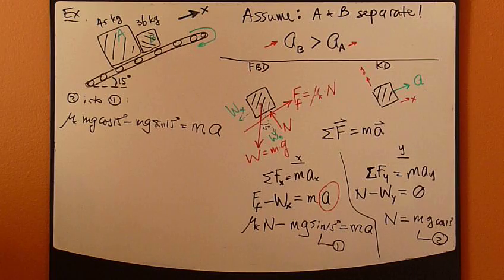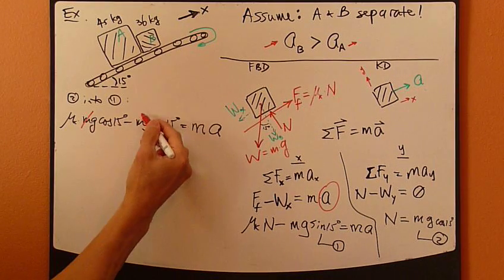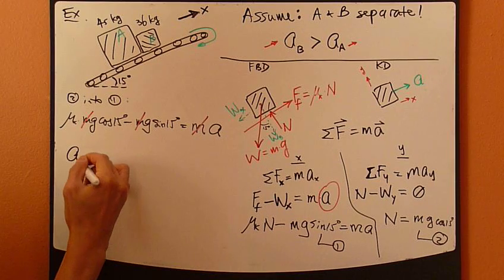Now look at this right here. We can simplify it a little bit. M, M, and M drop out of this equation. So rearrange this.